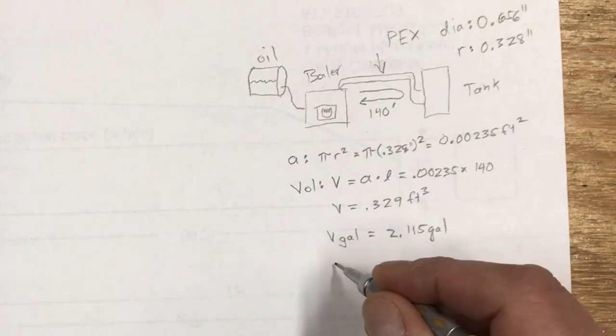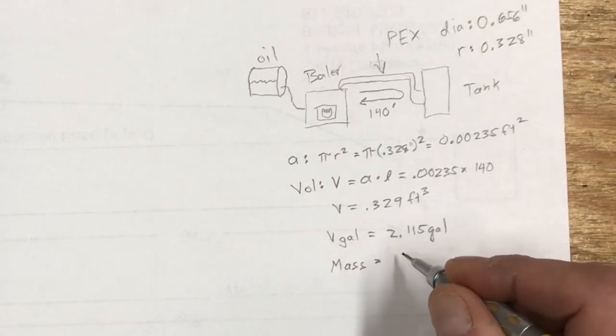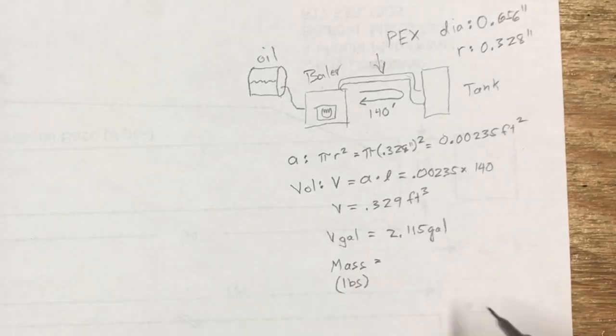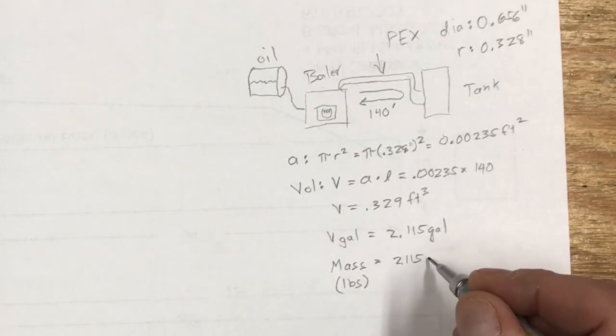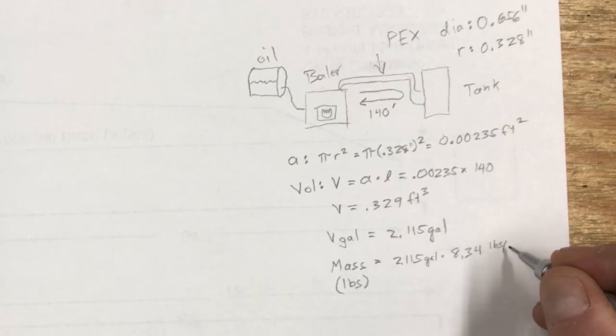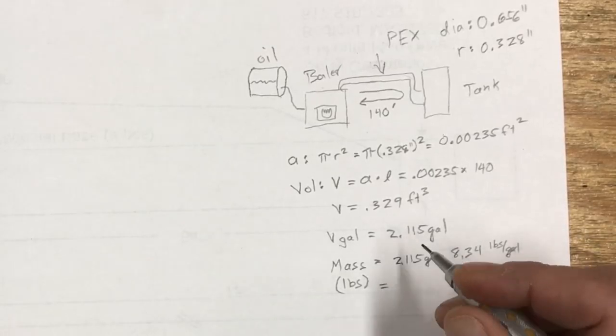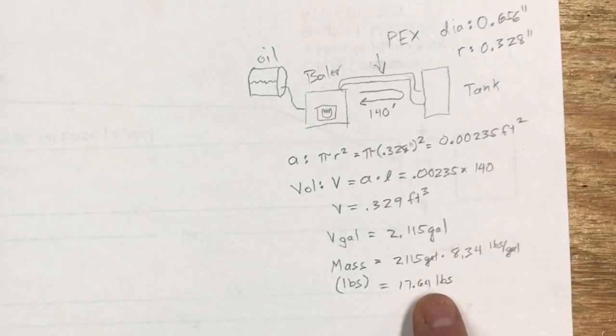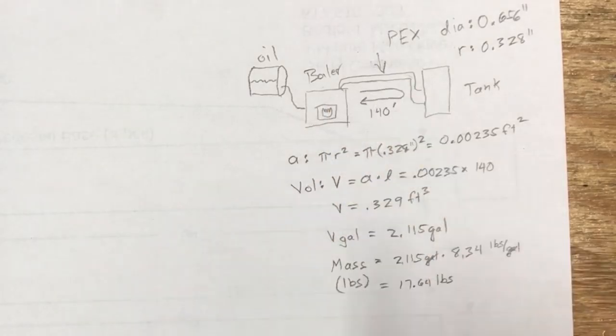So the mass of the water and this is in pounds again, sorry for those of you out there not in the metric world, is 2.115 gallons times 8.34, this is pounds per gallon. The gallon units cancel each other and you end up with a mass of 17.64 pounds. So there's about 17 and a half pounds of water in these PEX tubes all the time.